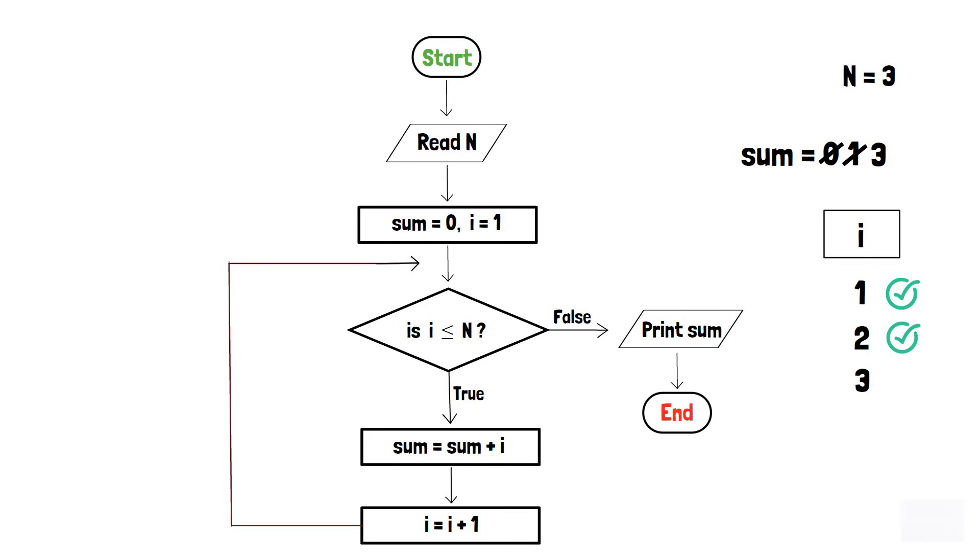Similarly, it will again check whether 3 is less than or equal to n or not. As n is equal to 3, the condition is again true. And hence, the sum becomes 3 plus 3 which is 6, and i becomes 4 after incrementation.